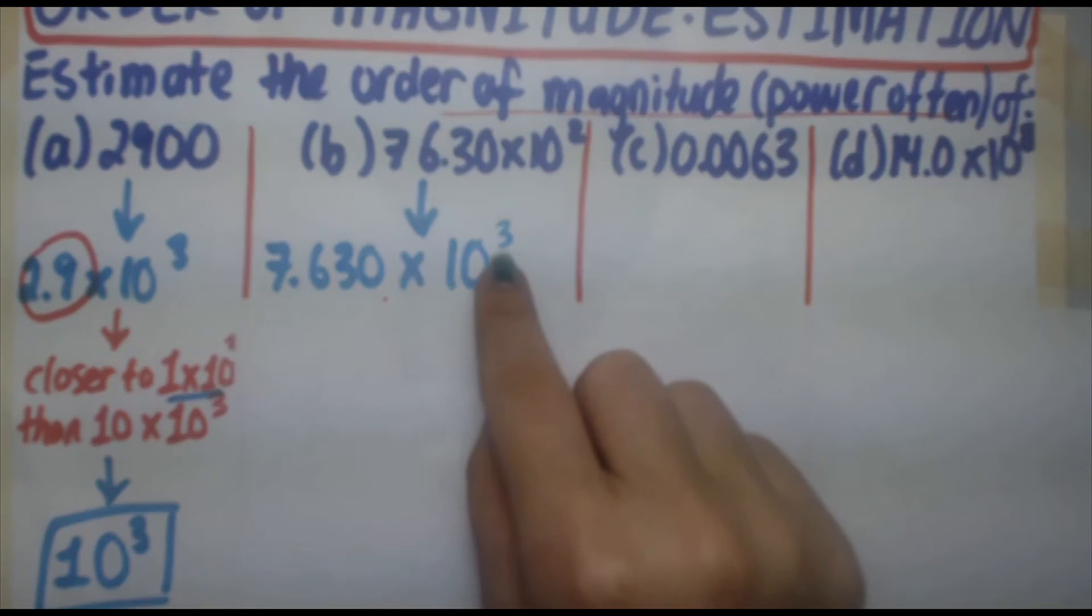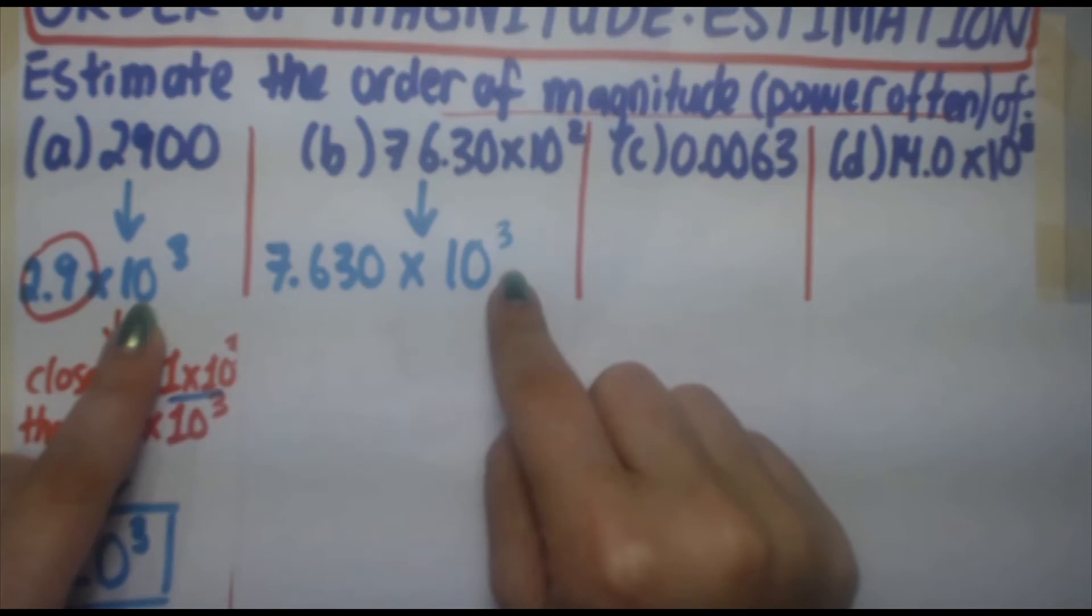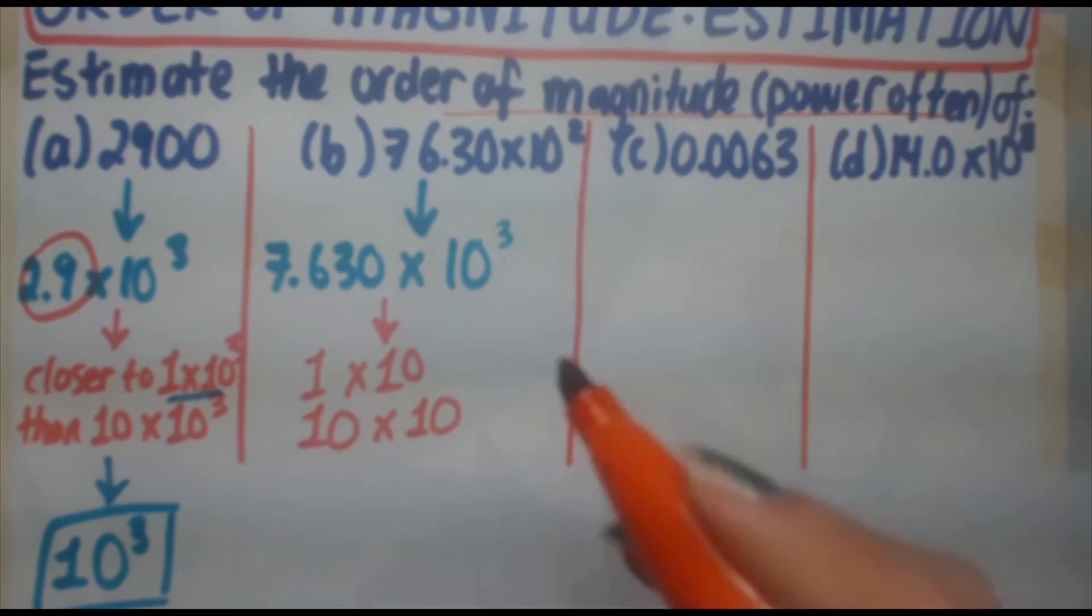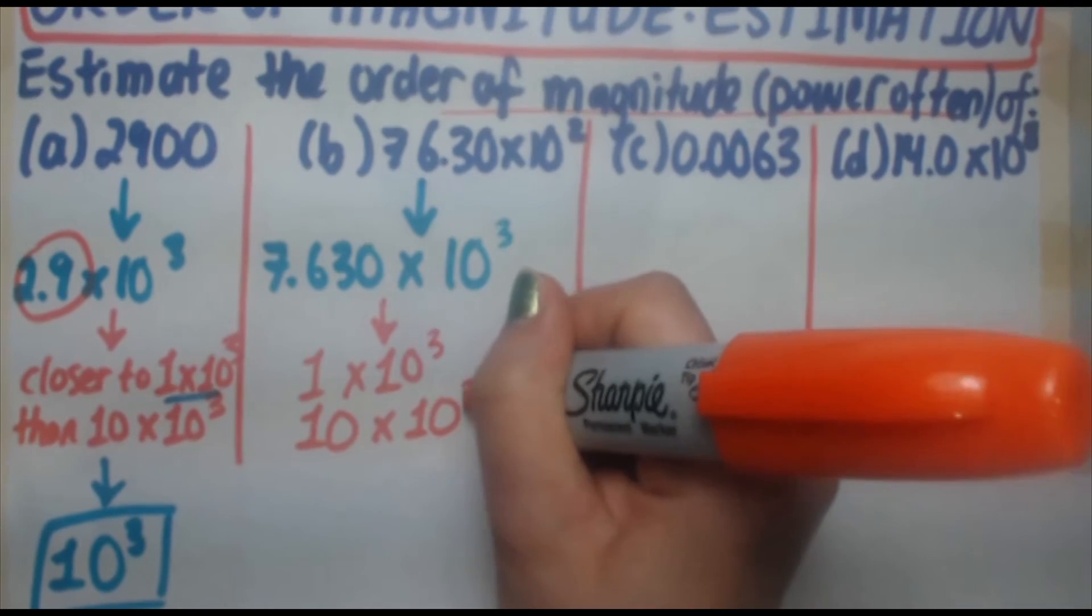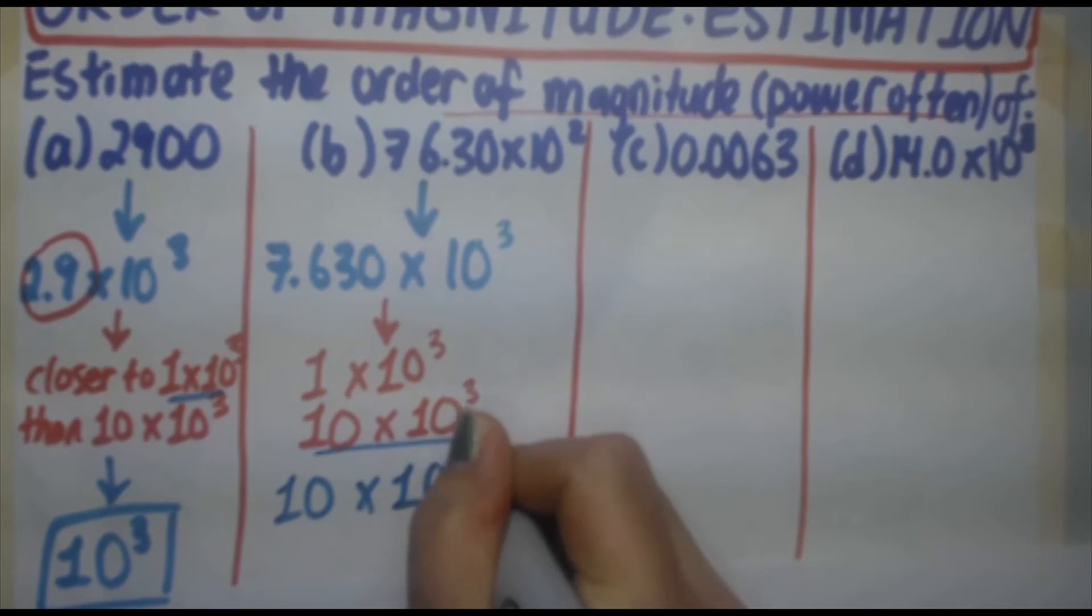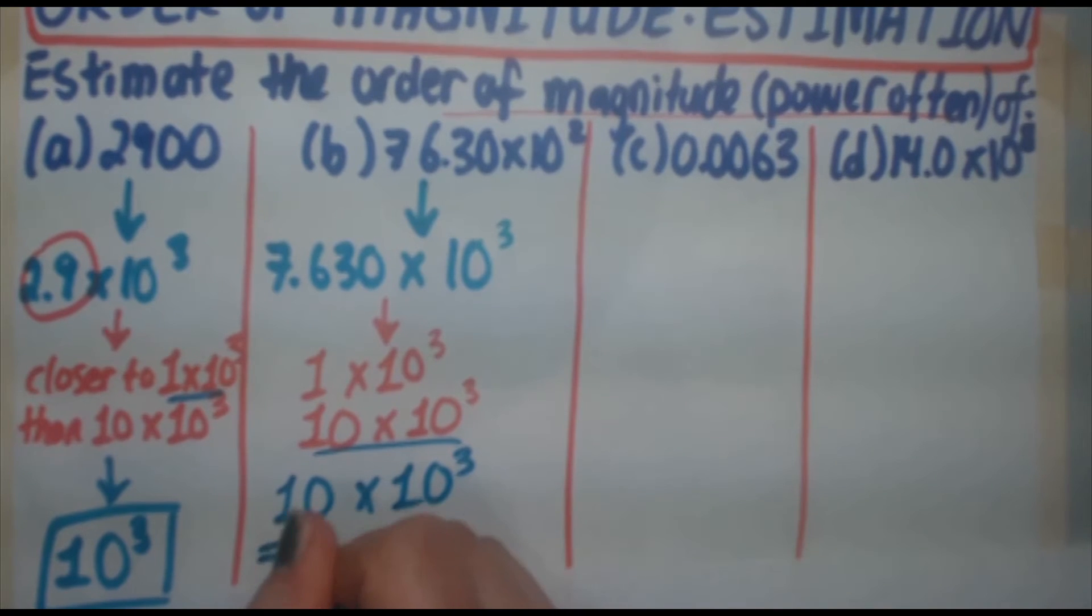So now we're going to look at boundaries again. This is also 10 to the 3. So we're going to use the same boundaries. We're going to use 1 times 10 to the 3, and 10 times 10 to the 3. In this case, 7.6 is closer to 10, and then it is closer to 1. So 10 times 10 to the 3 is the boundary that we're going to be looking at. But 10 times 10 to the 3 is equal, same thing as 1 times 10 to the 4.